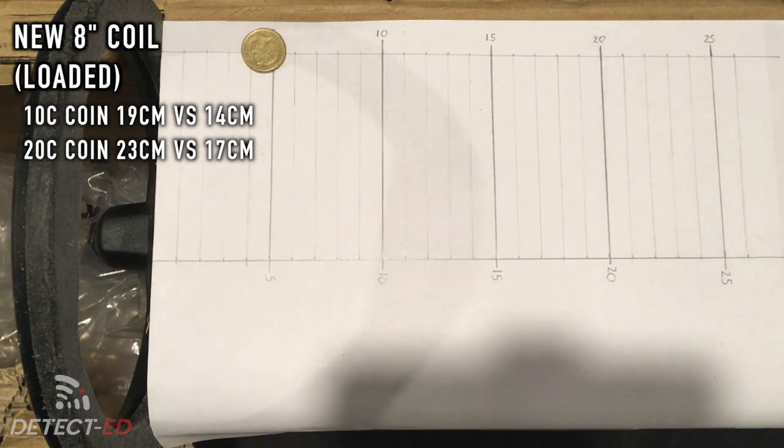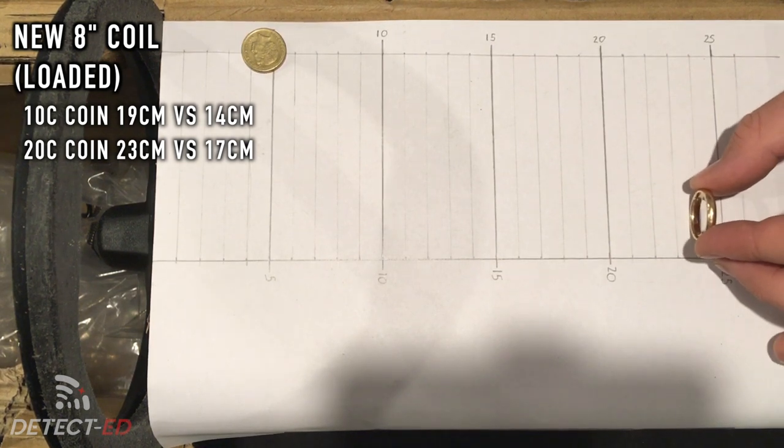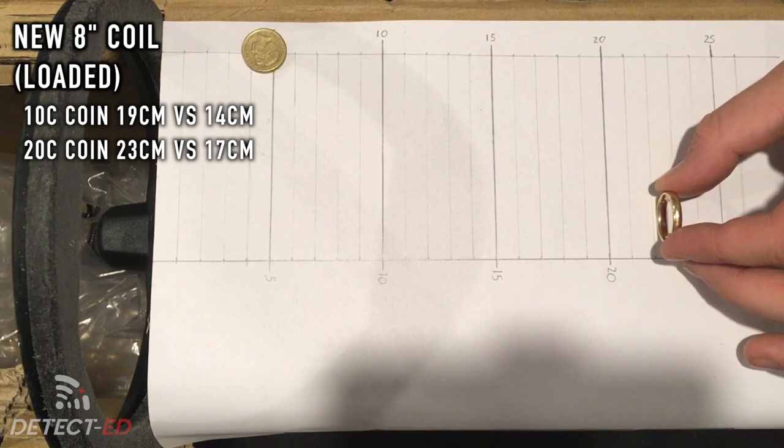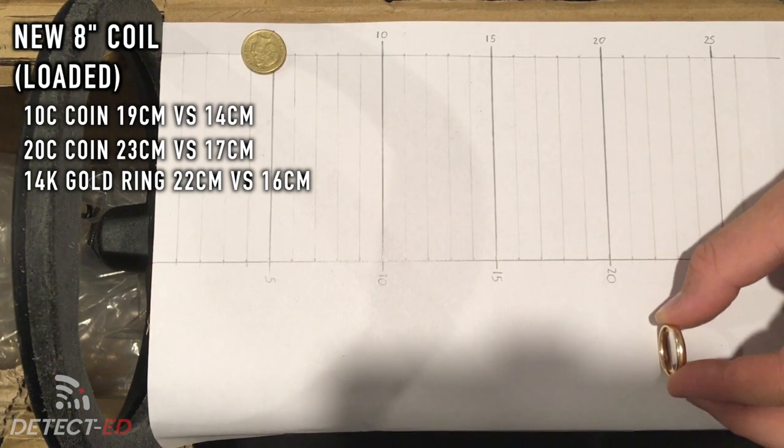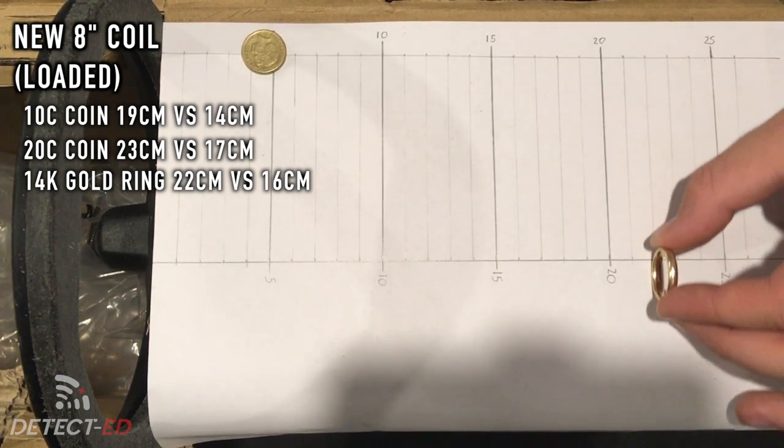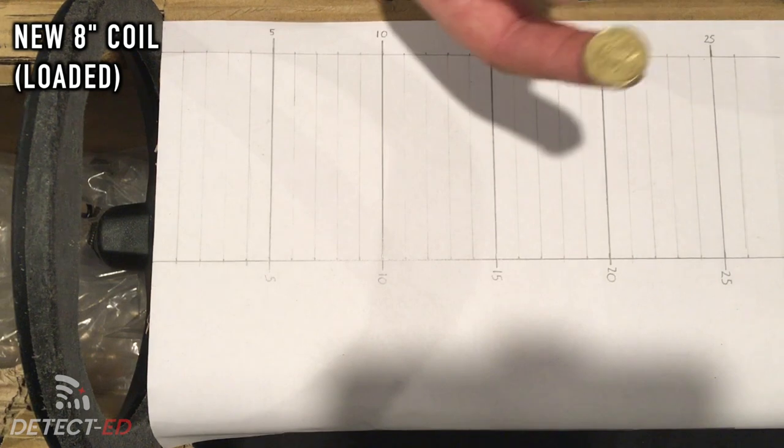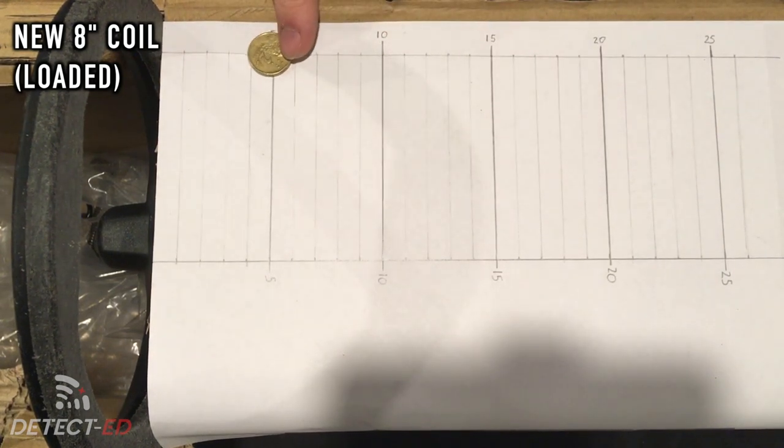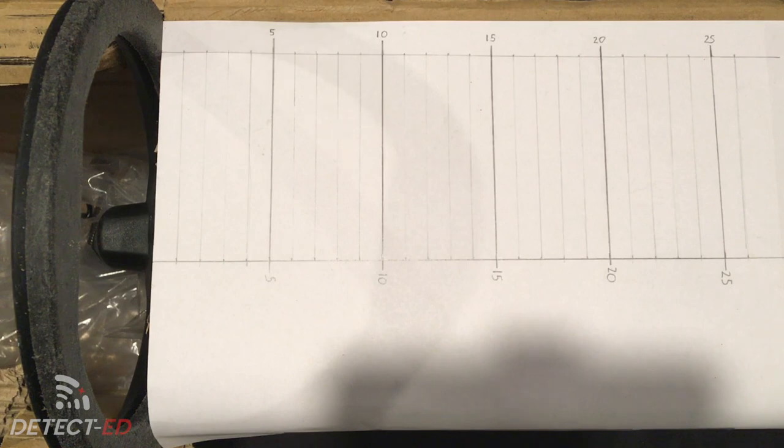22 centimeters is quite consistent. That's basically what salt water is doing - it's loading the coil up to where it's not quite falsing but it is increasing its sensitivity. Depending on how salty it is and how mineralized the conditions are below the ground will depend on how much depth you're going to get. So we'll go on to the smaller coil now.